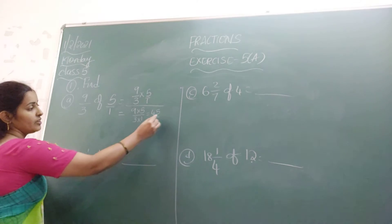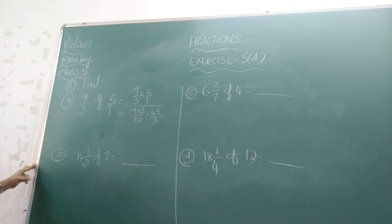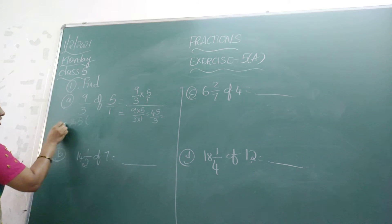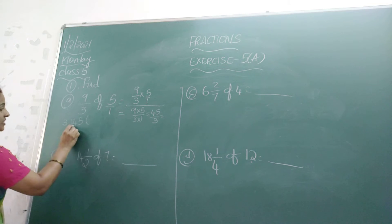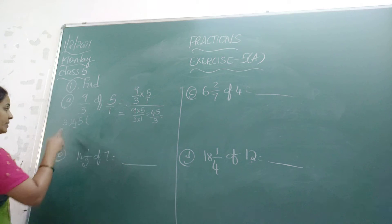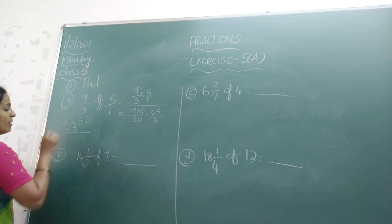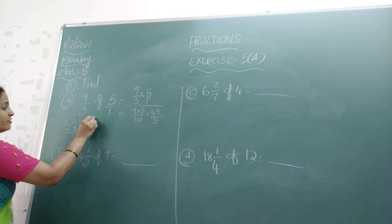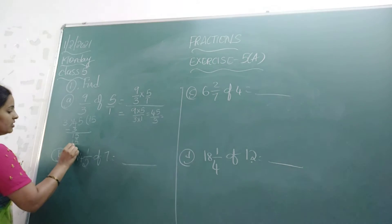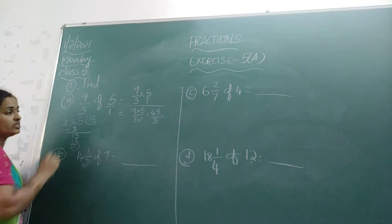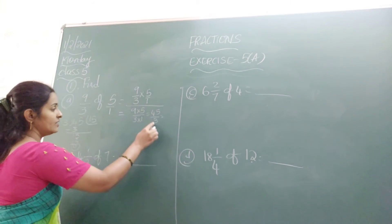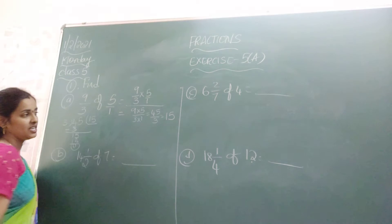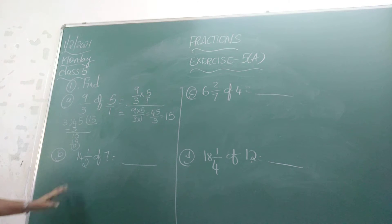Now we need to find the required answer by doing division. So 45 divided by 3. First let us take 4 — how many times does 3 go? 3 ones are 3, minus: 4 minus 3 is 1, bring down 5, making 15. 3 fives are 15, remainder 0. So 45 divided by 3 equals 15. Now look at the next question.